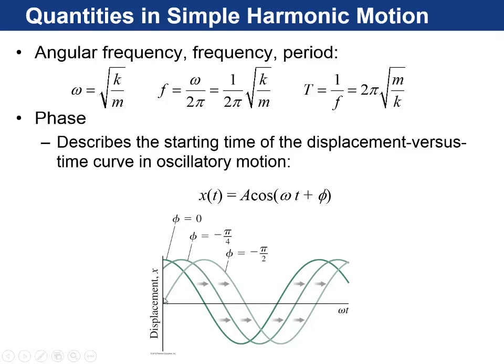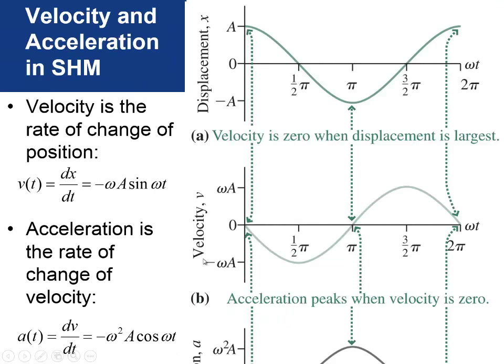If it doesn't start at rest at the maximum position, like if it starts with some velocity, then you can just change the phi and still use this cosine equation. So, for example, if something starts at x equals 0 with a positive velocity, you can set phi equals negative pi over 2 and you end up with something that looks a lot like a sine curve. So this phi just determines the starting position.